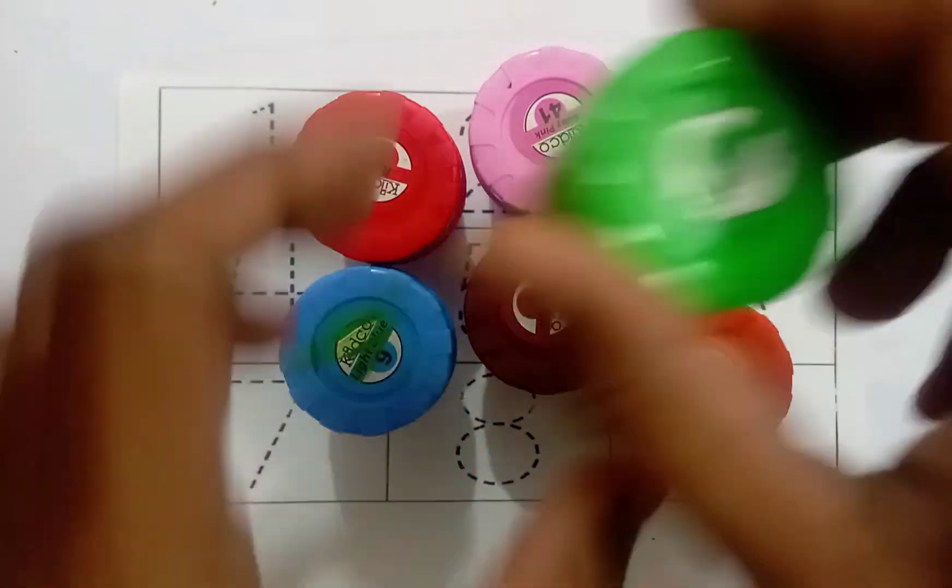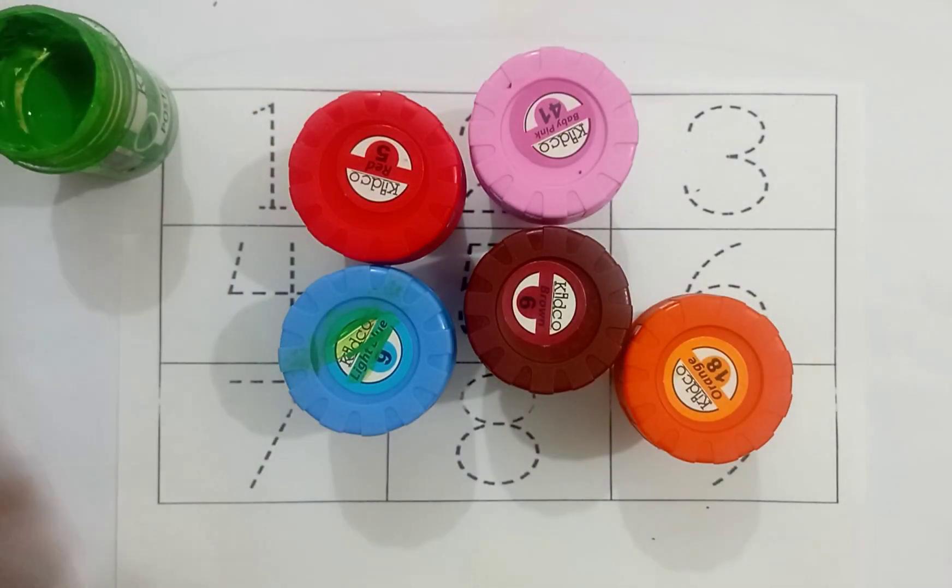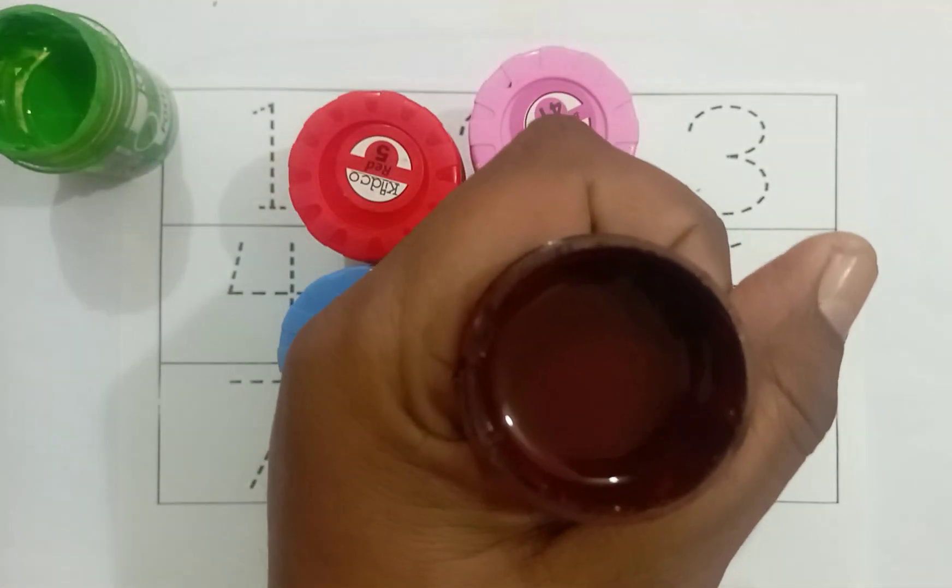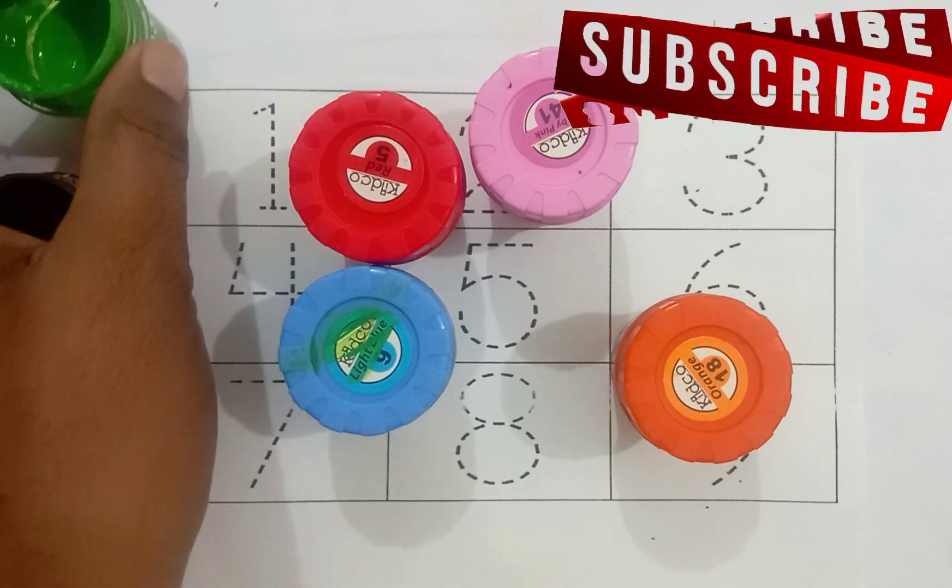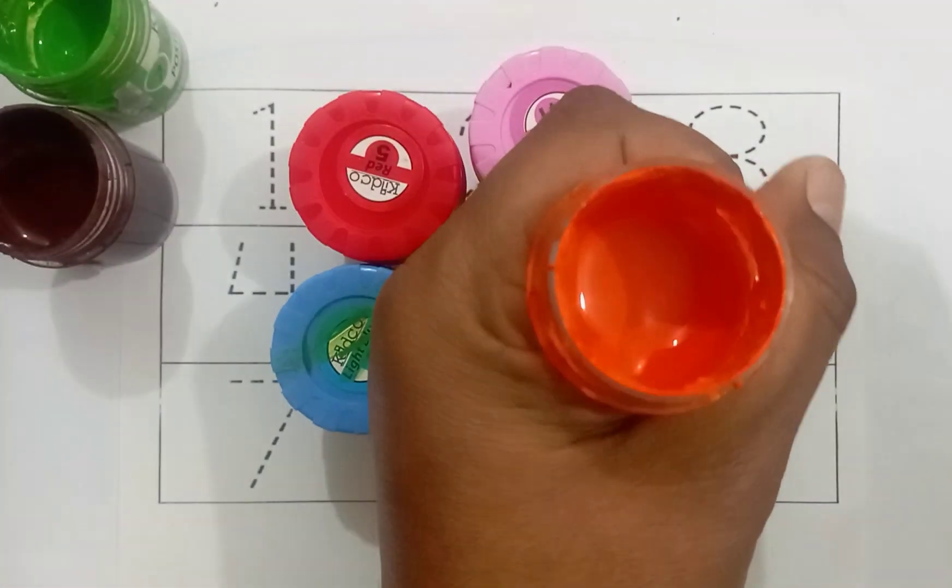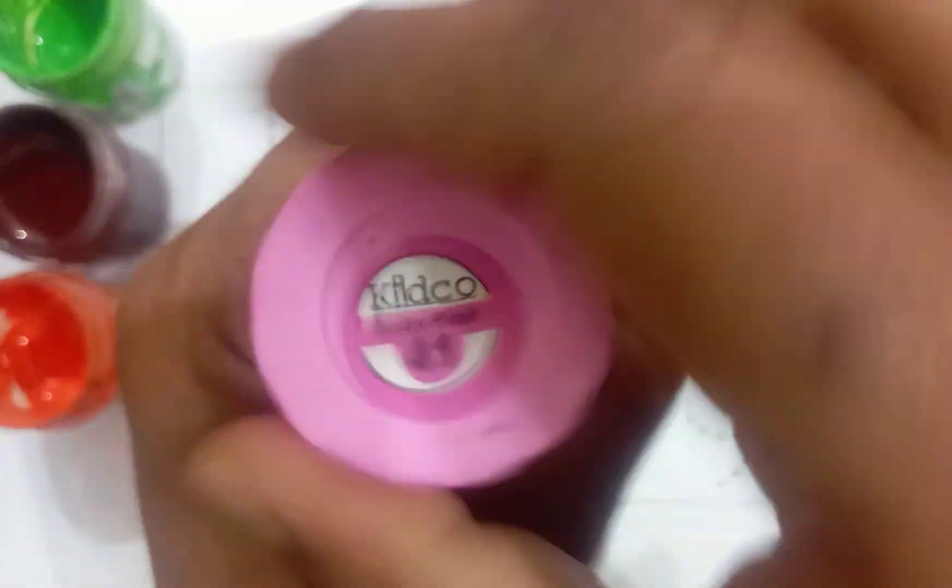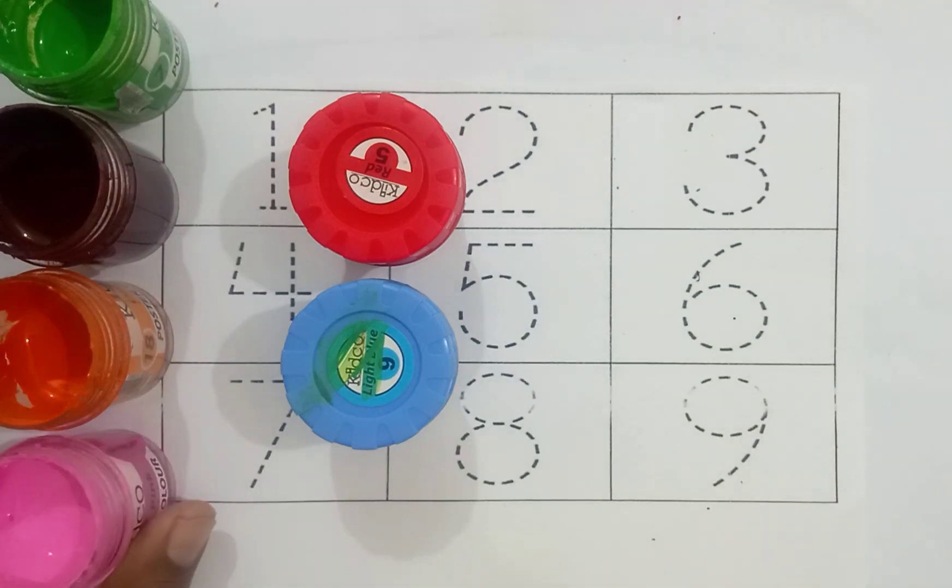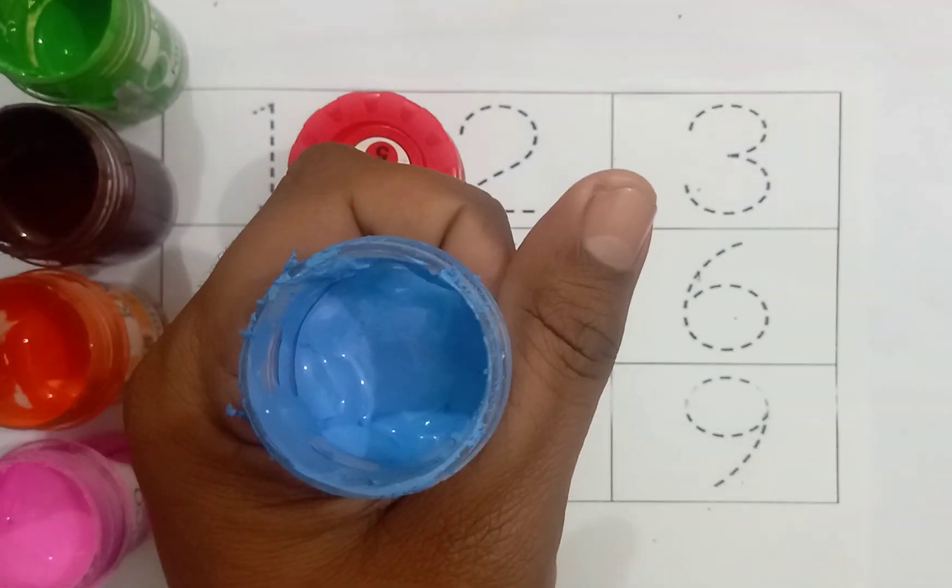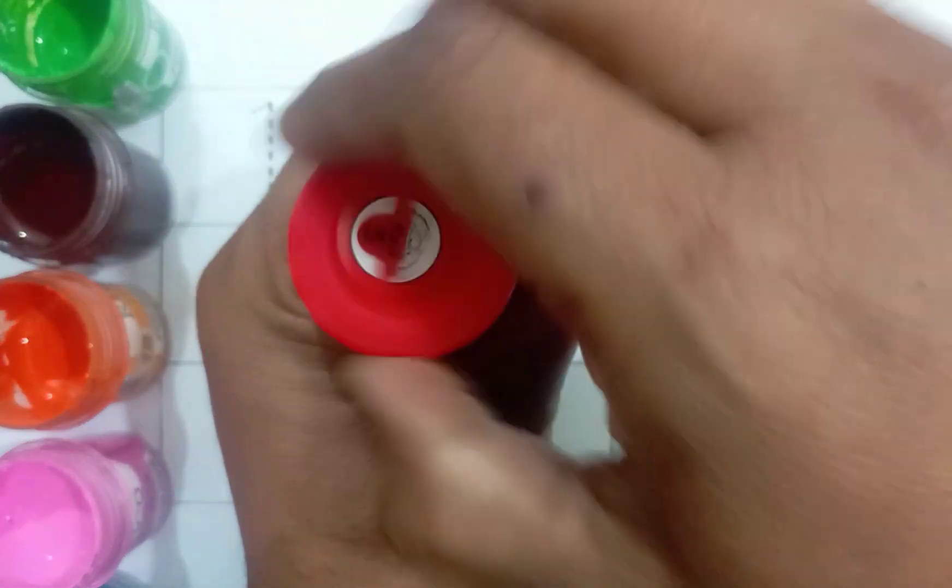Green color - which color is this? Green. Brown color - which color is this? Brown. Orange color - which color is this? Orange. Pink color - which color is this? Pink. Sky blue color - which color is this? Sky blue. Red color - which color is this? Red.